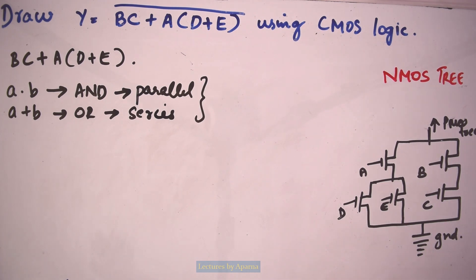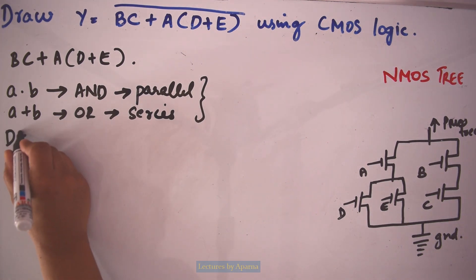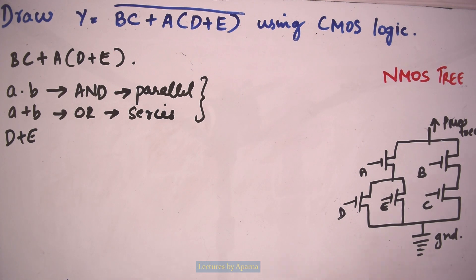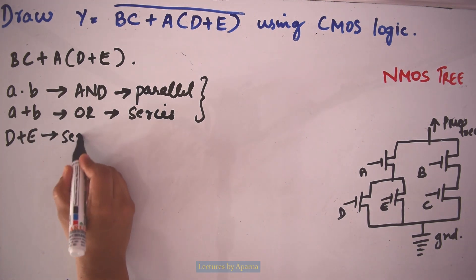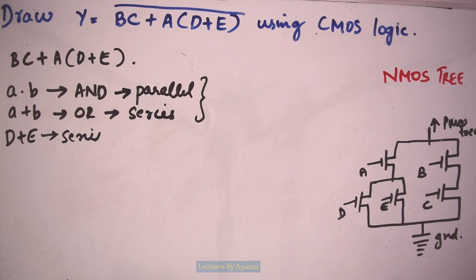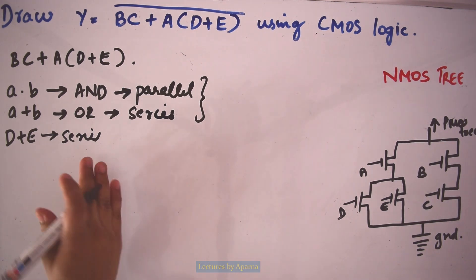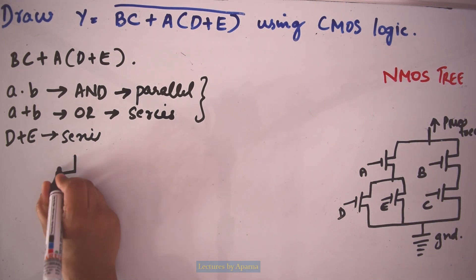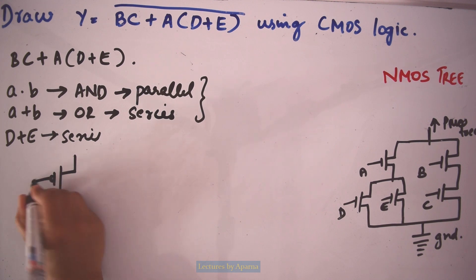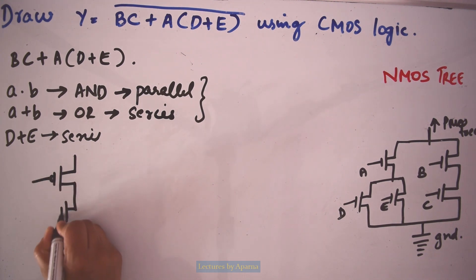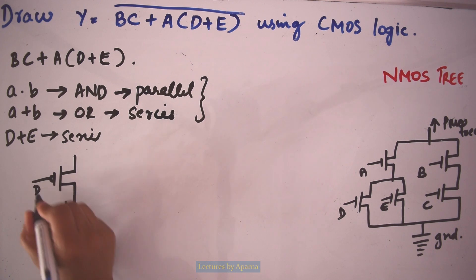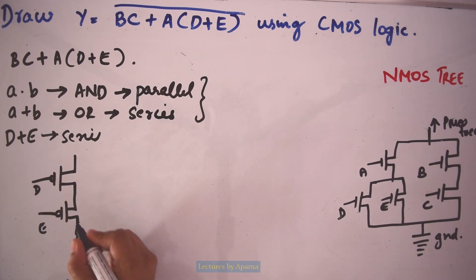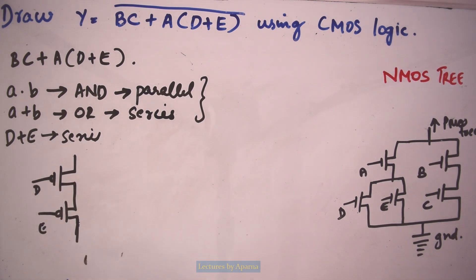First, let's take the function D plus E. D plus E is an OR operation, so in the PMOS tree the transistors will be in series. To implement D plus E, we connect the PMOS transistors for D and E in series. For PMOS there will be a bubble symbol, whereas for NMOS there won't be a bubble.